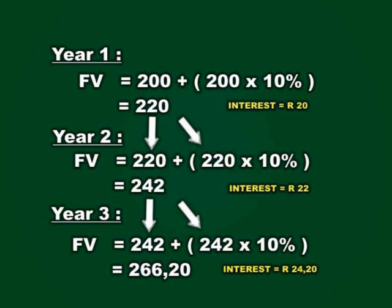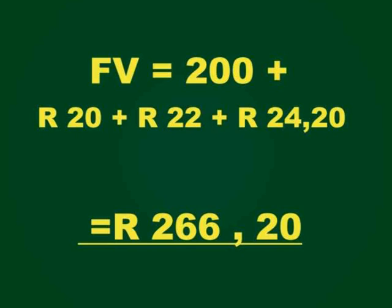During the third year, the interest you are charging is 10% of 242 Rand, which is equal to 24 Rand 20. So to recap: the interest charged in year 1 was 20 Rand, in year 2 it was 22 Rand, and in year 3 it was 24 Rand 20. Which means that at the end of three years, if you lent the money out at 10% per annum compounded once a year, your money would be worth 266 Rand 20 — slightly more than with simple interest.